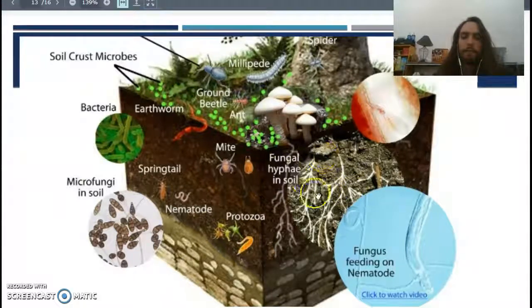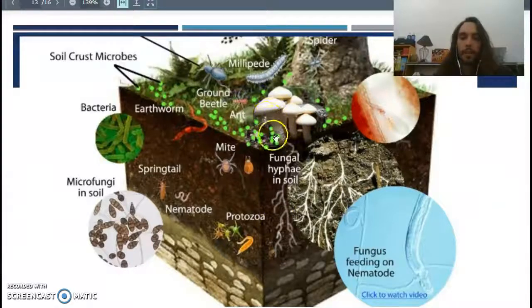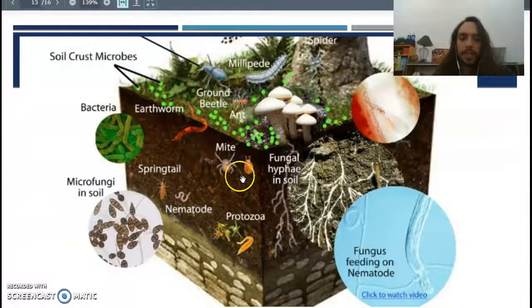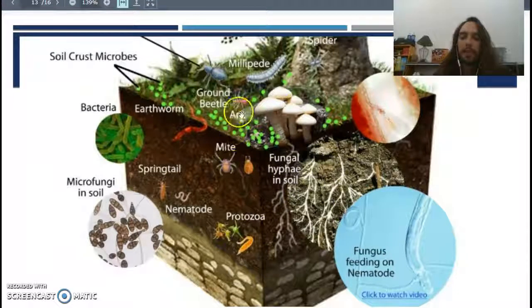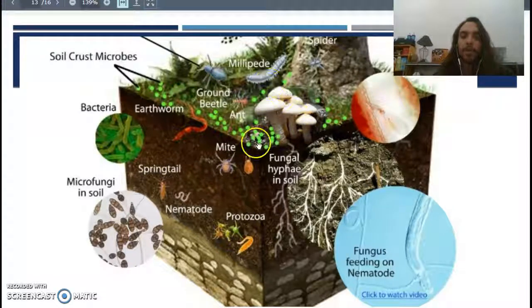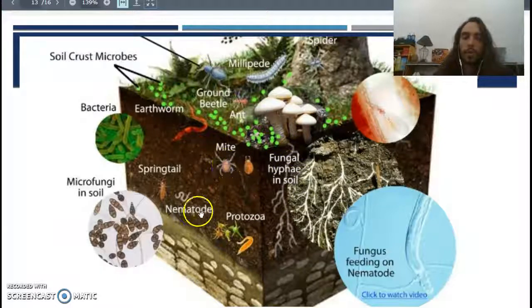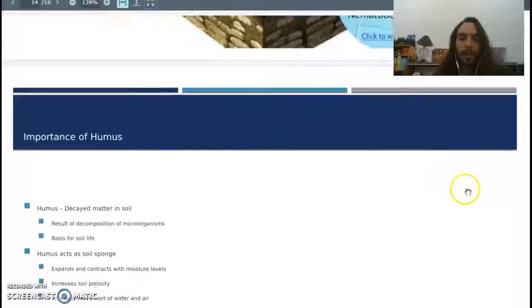We've got microfungi, that's just fungus that are really small. We've got fungal hyphae in the soil, so that's just stuff that's going down from mushrooms, kind of like the roots basically. We've got beetles, microbes on the top, microbes inside of the soil. There's all sorts of stuff going on, and it's really beautiful and amazing to think about because there are literally so many different species of organisms just in this little teeny brick of soil that we're looking at here that we can hardly even count the amount of species that are in there.